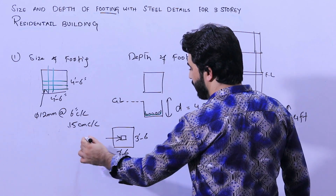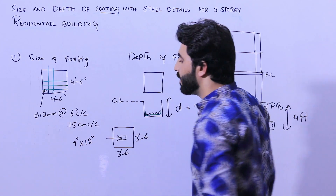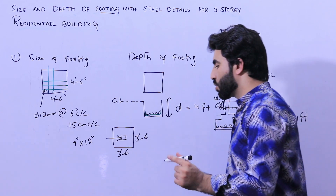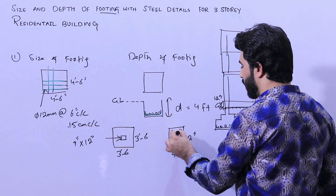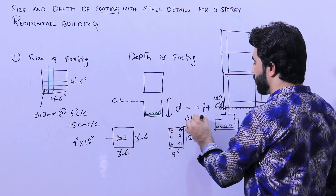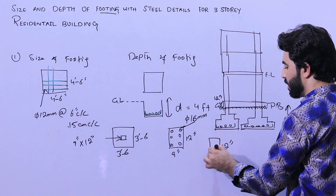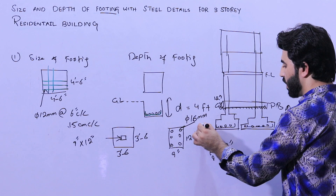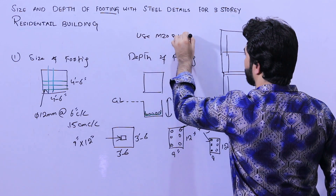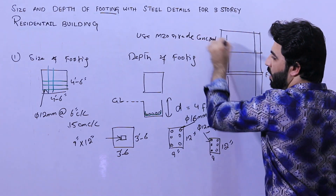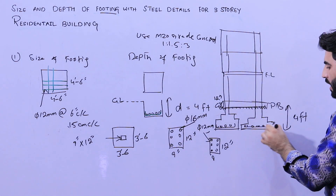For a two-story building, the column size should not be less than nine inches by 12 inches. This also applies to a three-story residential building. For a three-story building, provide nine by 12 inches with six numbers of steel rods, all with 16 millimeter diameter. For a two-story building, nine by 12 inches with six rods but the diameter should not be more than 12 millimeter. Use M20 grade concrete with a ratio of 1:1.5:3.